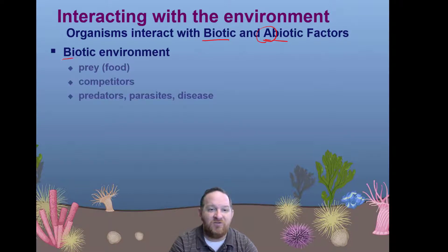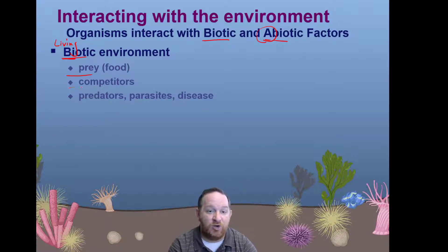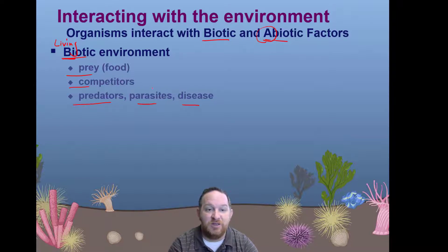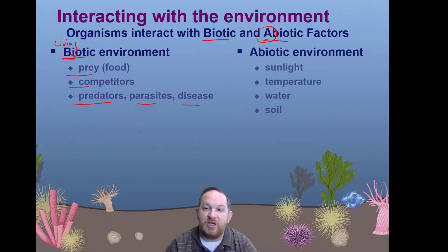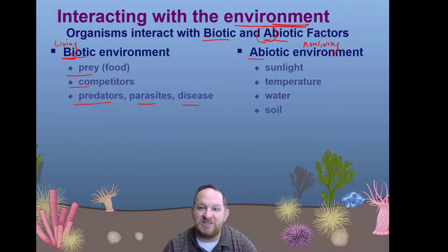In the biotic part — the living part — of course we see some prey. We also see competitors competing for the same resources. You'll see some predators. If you've got prey, you generally have predators. And then other living things that you might not notice are parasites and disease — living, but maybe not noticeable right up front.